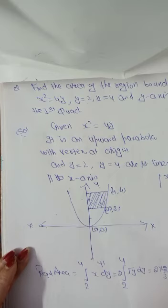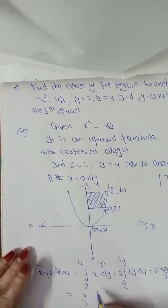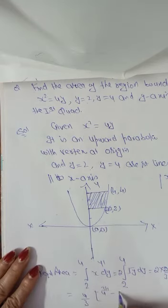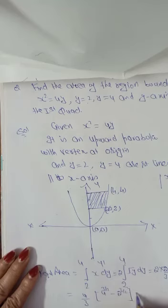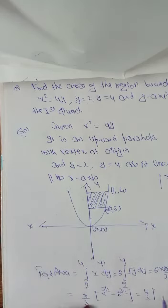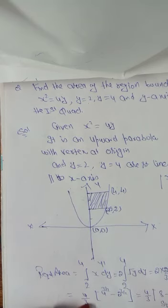Or 2 into 2 by 3, y power 3 by 2, lower limit 2, upper limit 4. So we have 4 by 3, 4 power 3 by 2 minus 2 power 3 by 2. So 4 by 3, it is 4 by 3 which is 8 minus 2 root 2 square units.